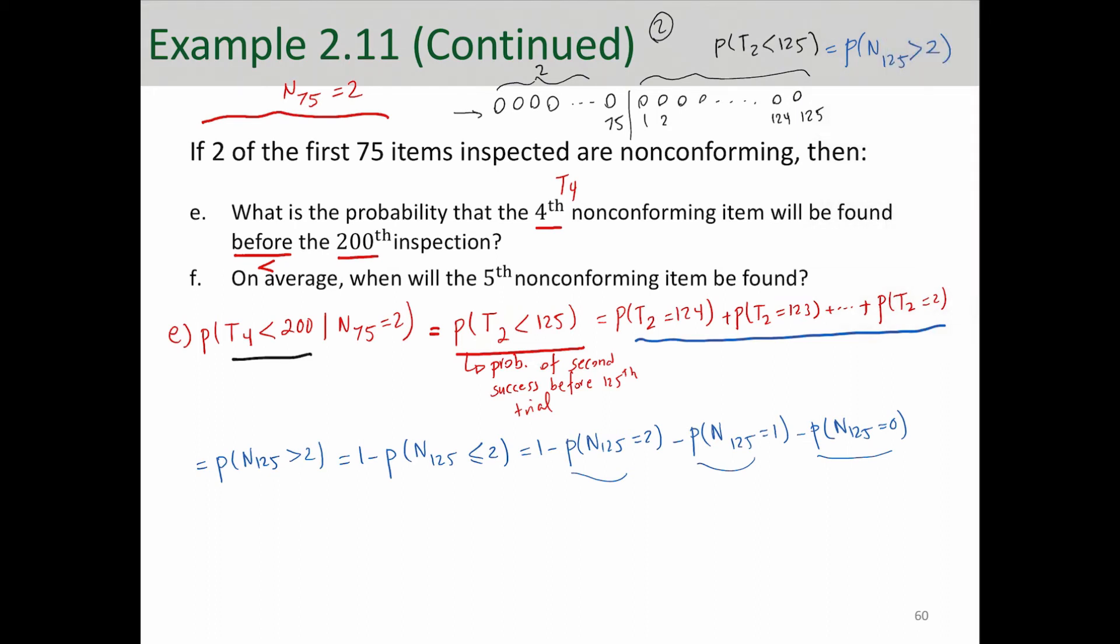Let's move on to part F. This part says, on average, when will the fifth non-conforming item be found? Well, we know on average is expected value.